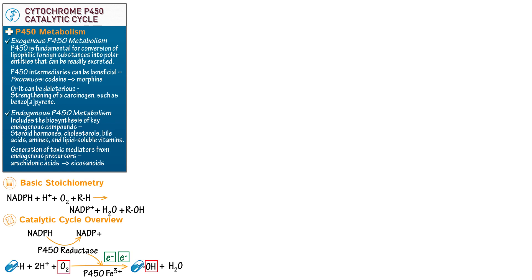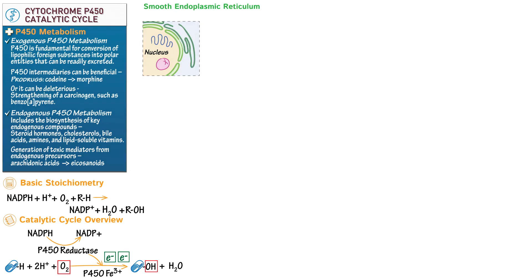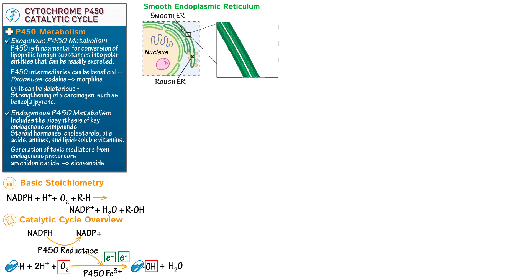Now let's look at where the reaction actually occurs in the cell — it's anchored to the ER membrane. We draw a portion of a cell including the nucleus with nucleolus and chromatin, and endoplasmic reticulum. Rough ER is lined with ribosomes and essential for protein synthesis, while smooth ER is void of ribosomes and is the location of P450. In a magnified view of the smooth ER membrane, P450 is anchored facing into the cell cytoplasm, alongside neighboring P450 reductase, which provides electrons to P450, and cytochrome B5, which can provide the second electron in the catalytic cycle.